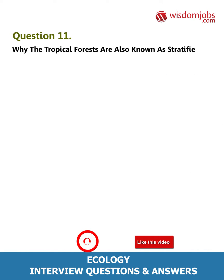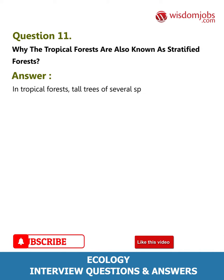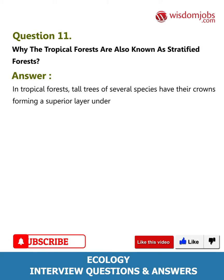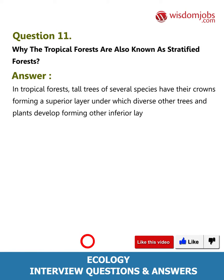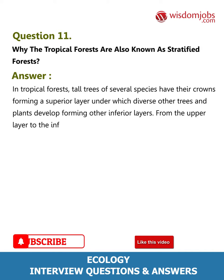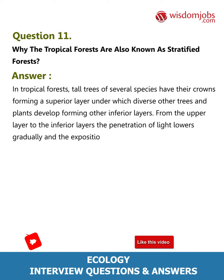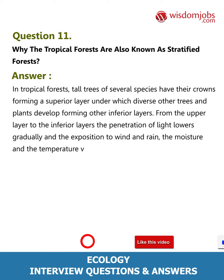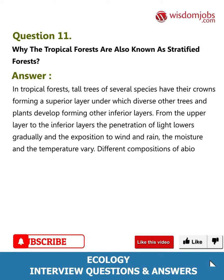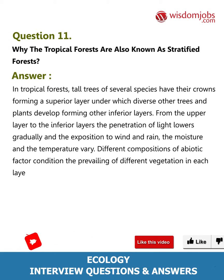Question 11: Why are tropical forests also known as stratified forests? In tropical forests, tall trees of several species have their crowns forming a superior layer, under which diverse other trees and plants develop, forming inferior layers. From the upper layer to the inferior layers, the penetration of light decreases gradually, and the exposure to wind, rain, moisture, and temperature vary. Different compositions of abiotic factors condition the prevalence of different vegetation in each layer.